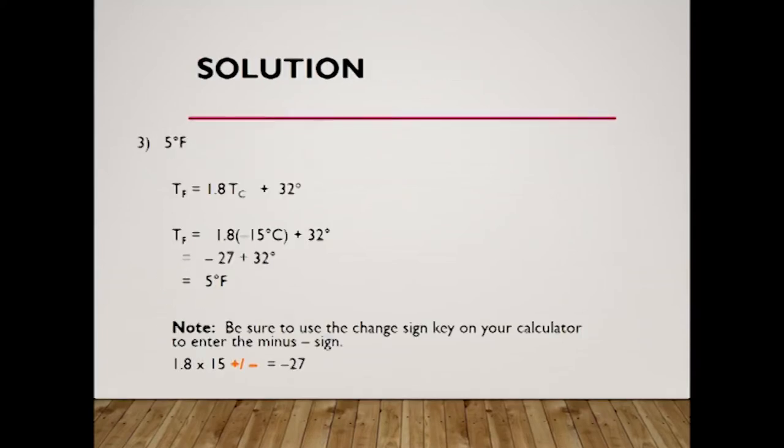Did you get 5 degrees Fahrenheit? That's correct. Let's see what happened. If you substitute using that equation, 1.8 times the temperature in Celsius, you're gonna have a negative number plus a positive number, and you're gonna end up with 5.